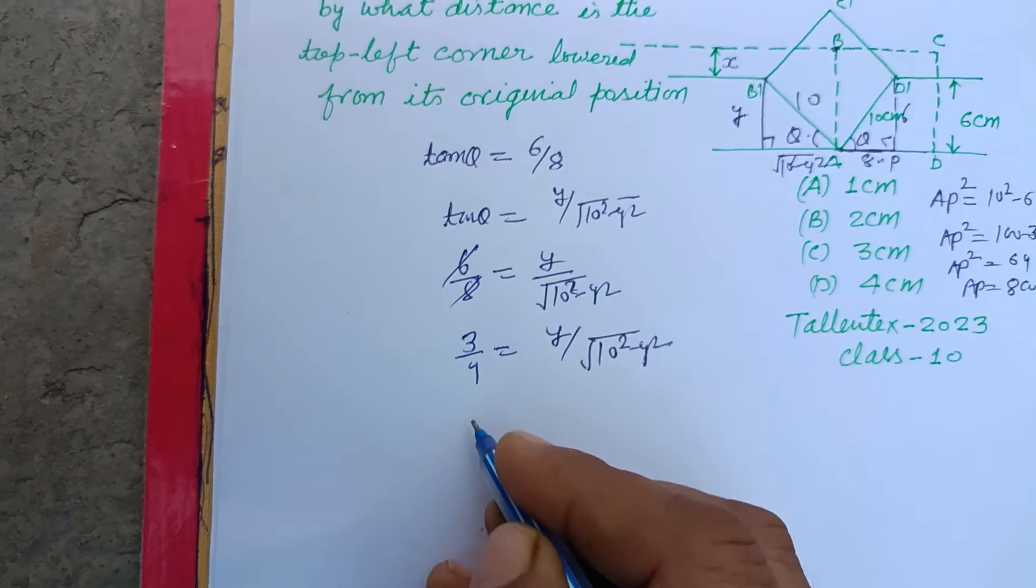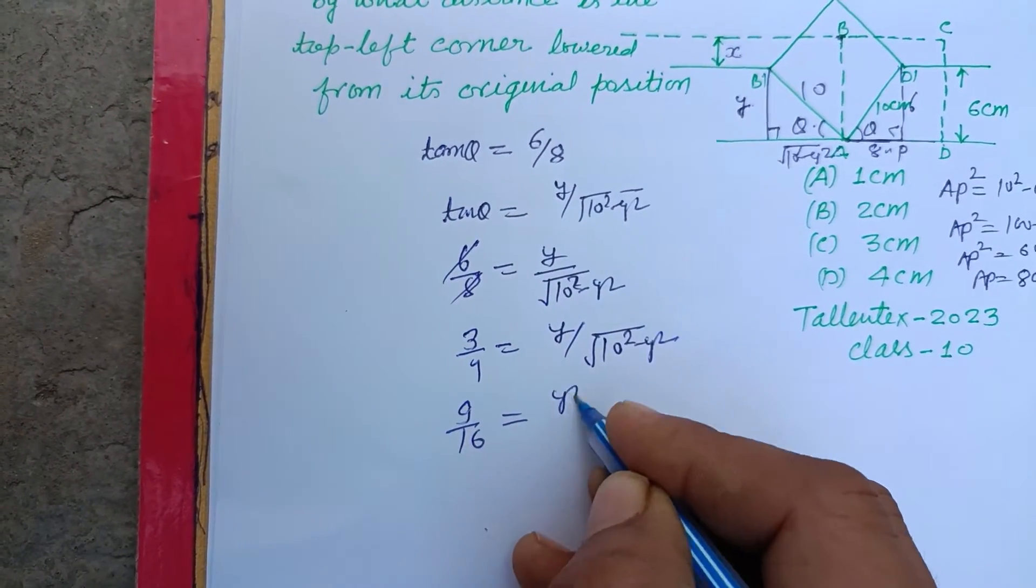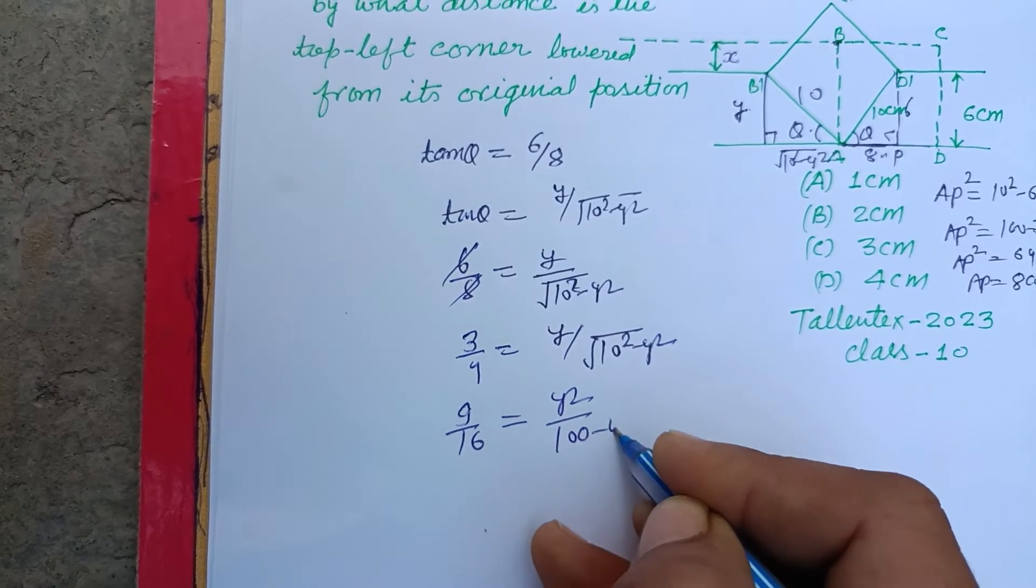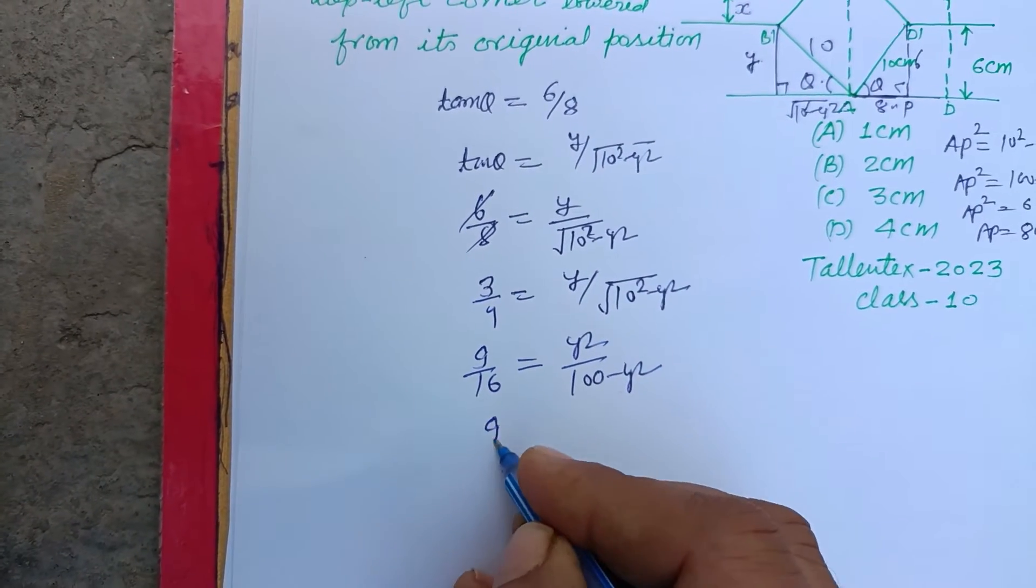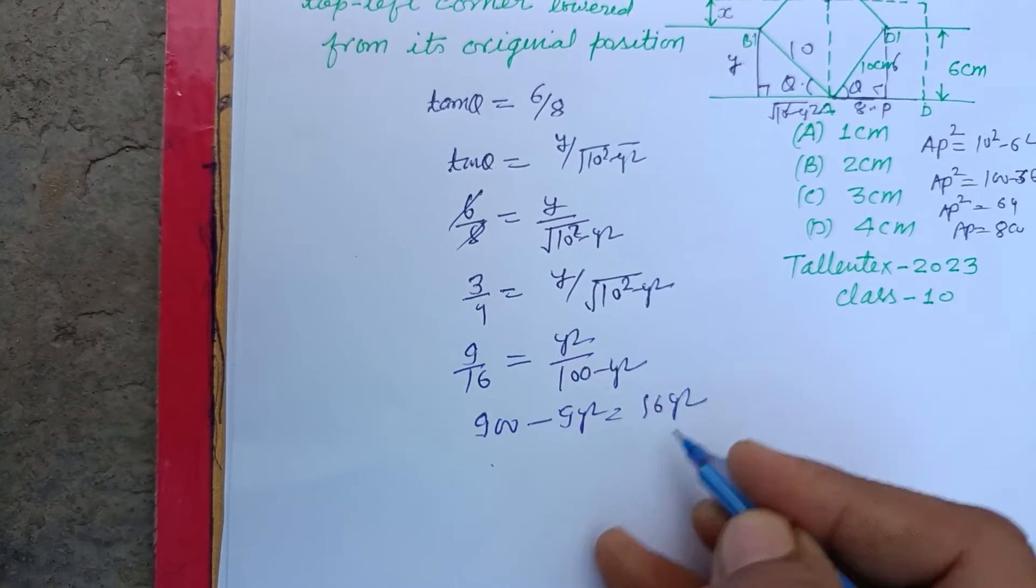Squaring both sides, this is 9 upon 16 equals Y square upon 100 minus Y square. So this is 900 minus 9Y square equals 16Y square.